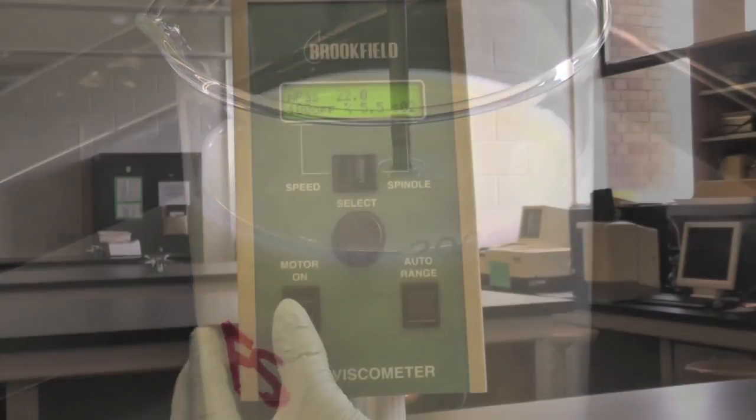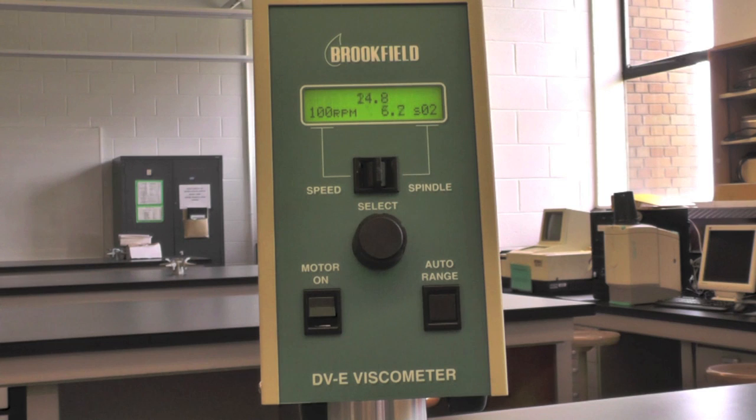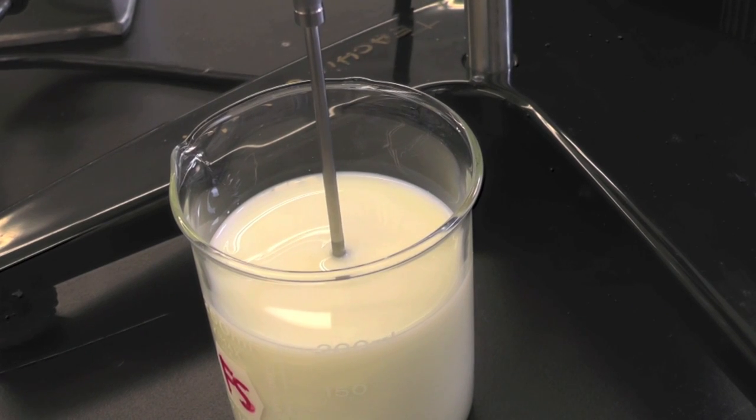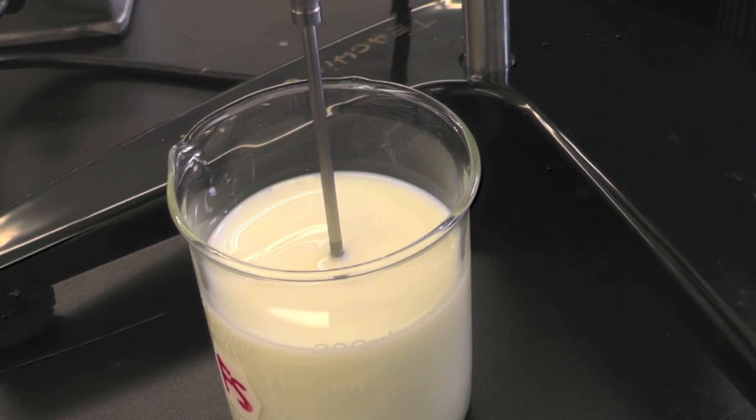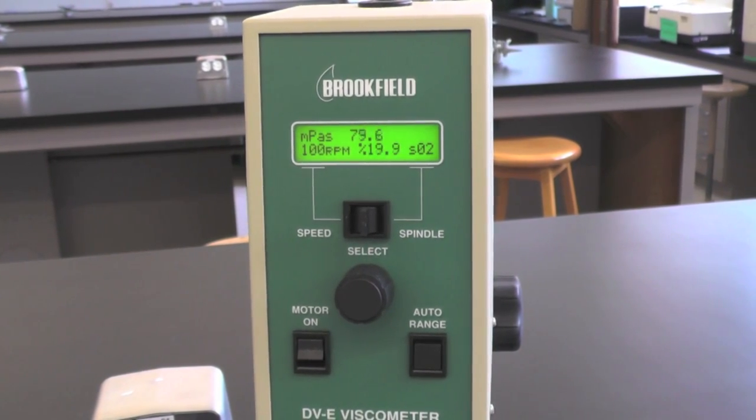Once the spindle is submerged, turn on the motor and the spindle should be spinning. Make sure your spindle is always at the center of your beaker. Wait a few seconds and record the reading that is most frequently displayed in MPAS.